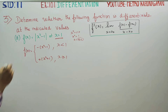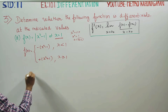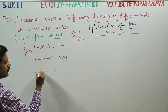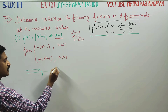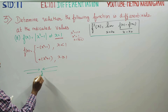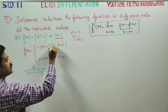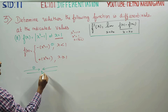We will start with our sum. x is equal to 1. We find the left-side derivative of 1 and the right-side derivative of 1.